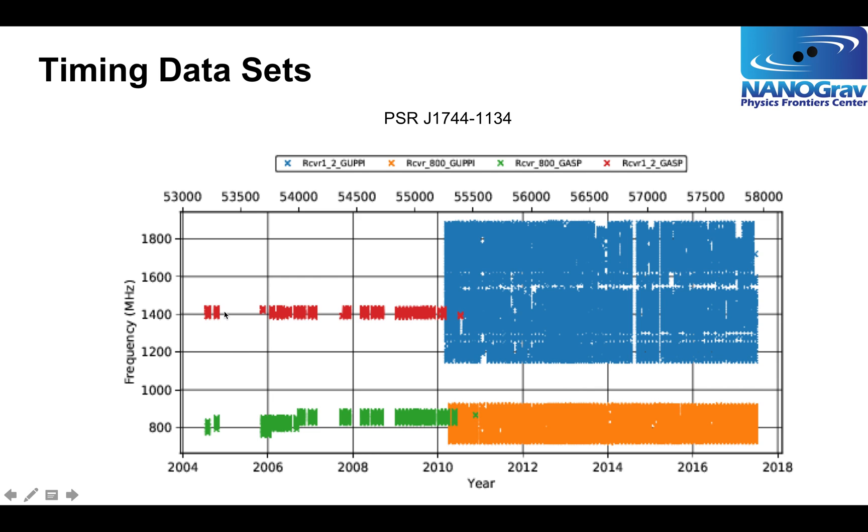Around 2010 at Green Bank and 2012 at Arecibo, we introduced new instruments called GUPPI and PUPPI that allowed us to collect much wider bandwidths, and we do that simply because more data is better. GUPPI and PUPPI allowed collection of bandwidths up to 800 megahertz, an order of magnitude, actually more than an order of magnitude, more than the previous generation instruments.